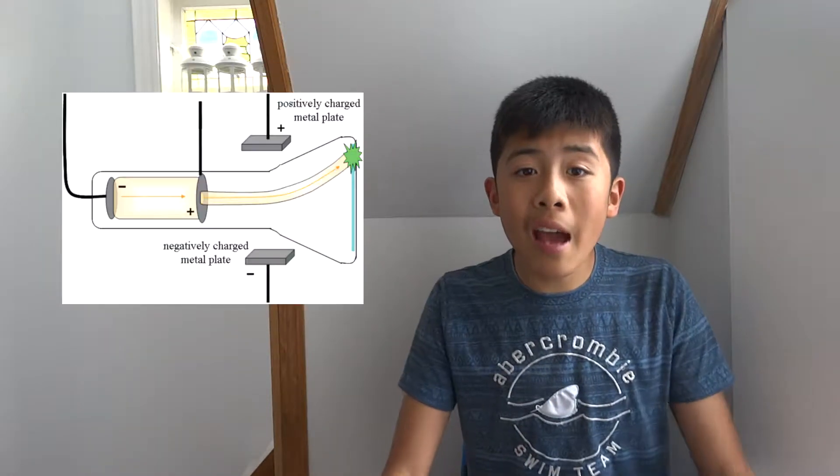First, let's talk about Thompson. He created his model in 1897 and it looked like this. He used the cathode ray tube and theories of the previous scientists like Democritus and Dalton to support his model. They believed that the atom was an indestructible sphere that was uniform.